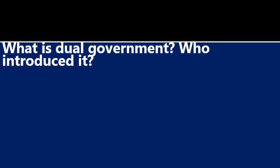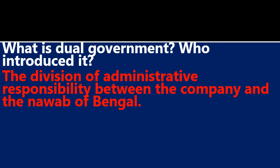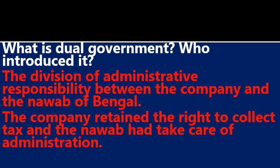What is Dual Government? Who introduced it? The Division of Administrative Responsibility between the company and the Nawab of Bengal. The company retained the right to collect tax and the Nawab had to take care of administration. Robert Clive introduced it.